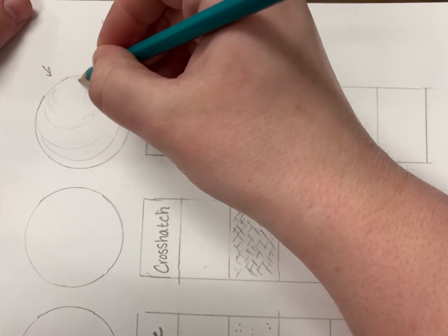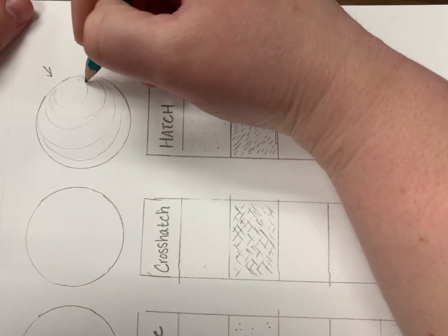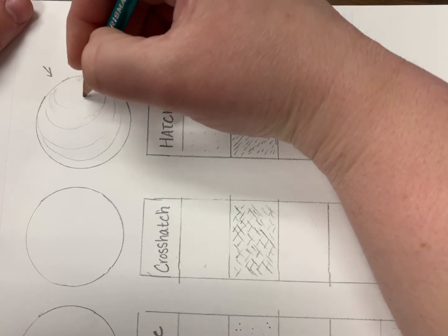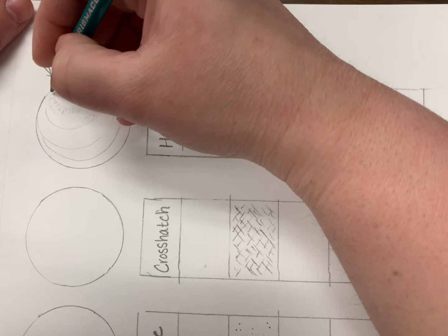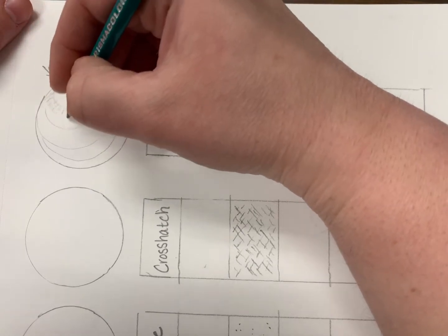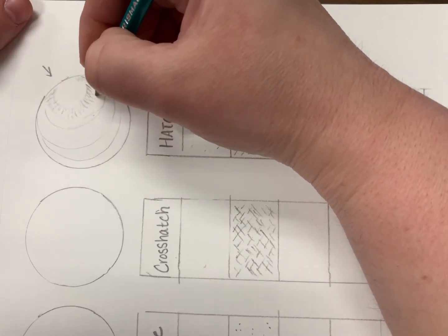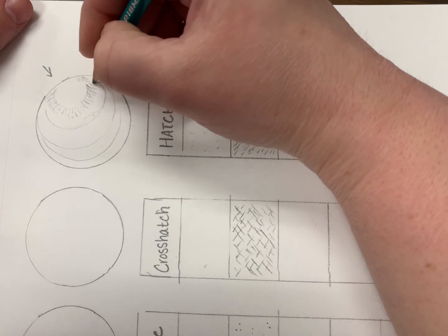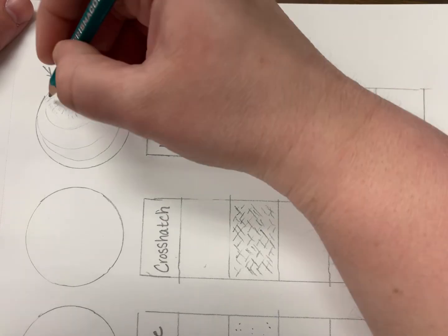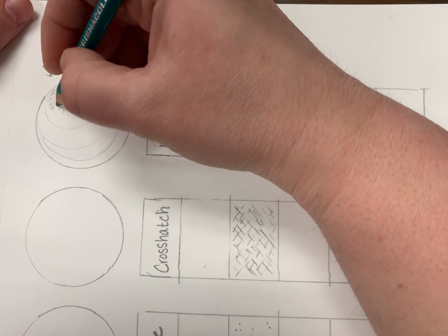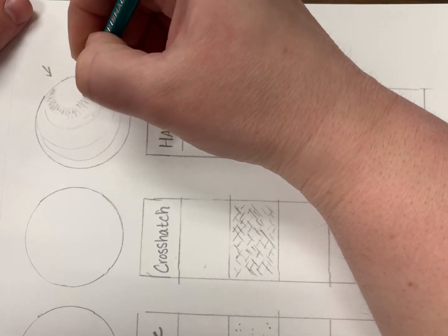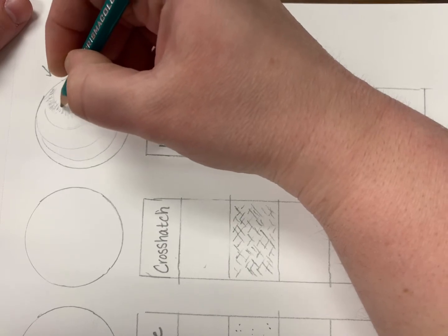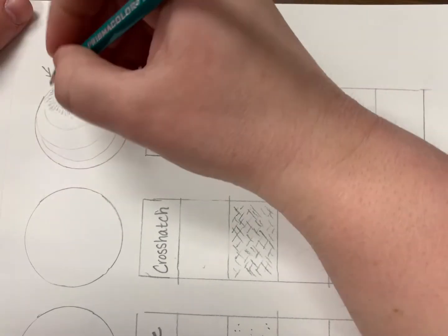But as you're applying the hatching, you're going to keep these lines going in the same direction. So as it's getting darker and darker, I'm going to start putting these lines closer together and apply a little more pressure with the pencil. Instead of applying more pressure, I can also switch to a different graphite pencil—instead of the 2B you can move to like a 4 or 6B.